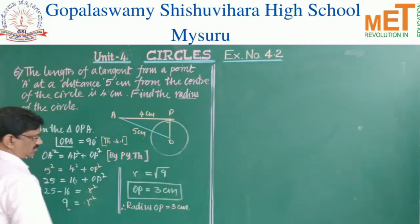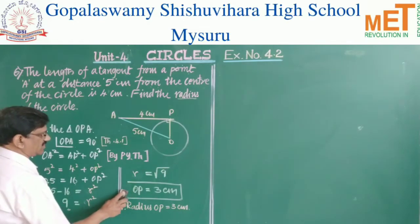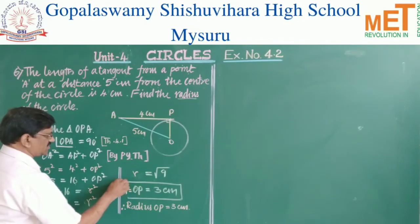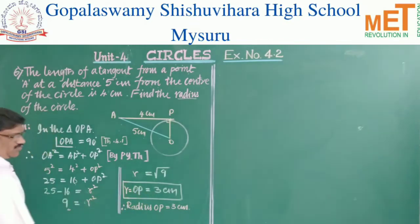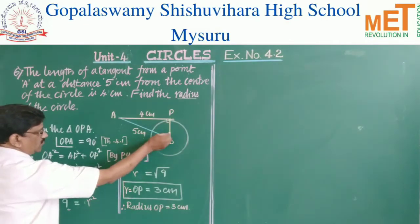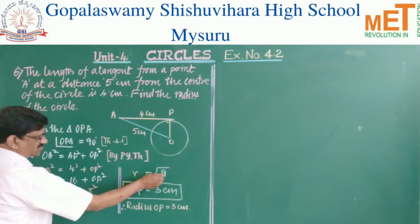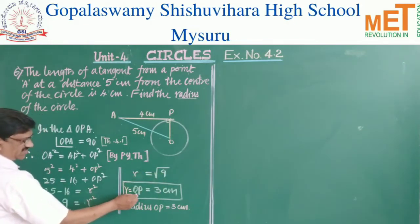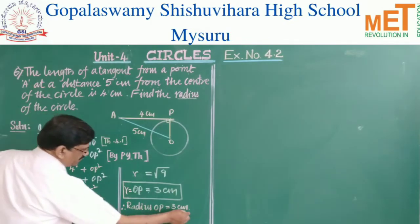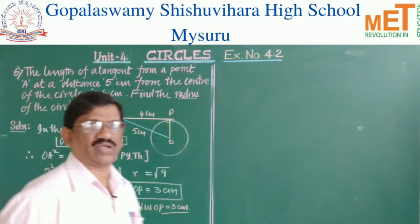Therefore r = √9 = 3 centimeters. The radius OP is equal to 3 centimeters. Therefore the radius of the circle is 3 centimeters.